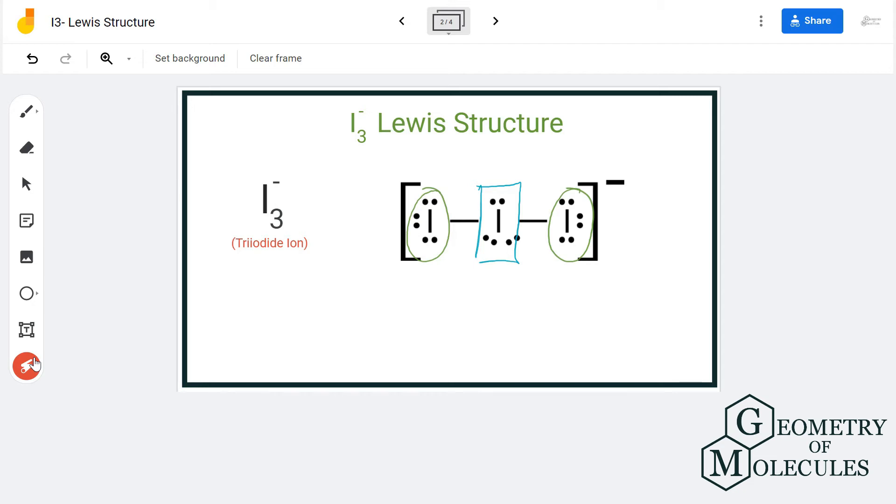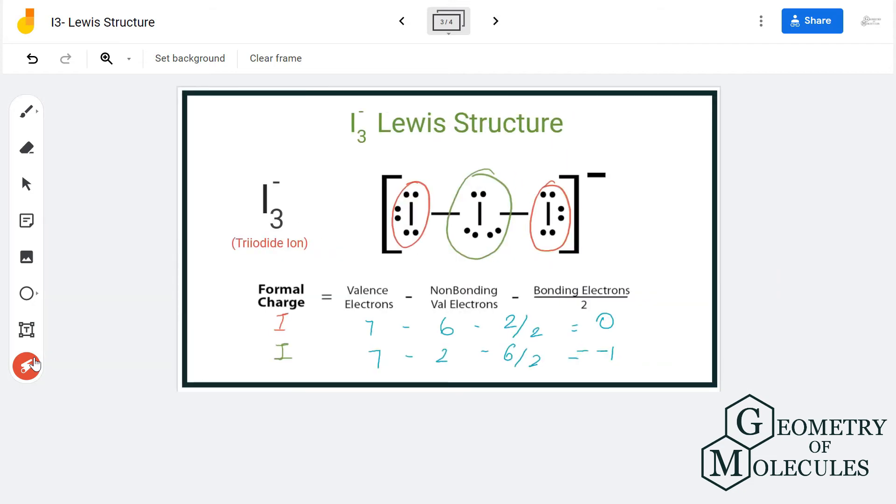to confirm that this is the right Lewis structure, we are going to check the formal charges of iodine atoms. The iodine atoms that are on the outside will have different charges than the one in the center. By using the formula for formal charge, we are going to find out the charges. The